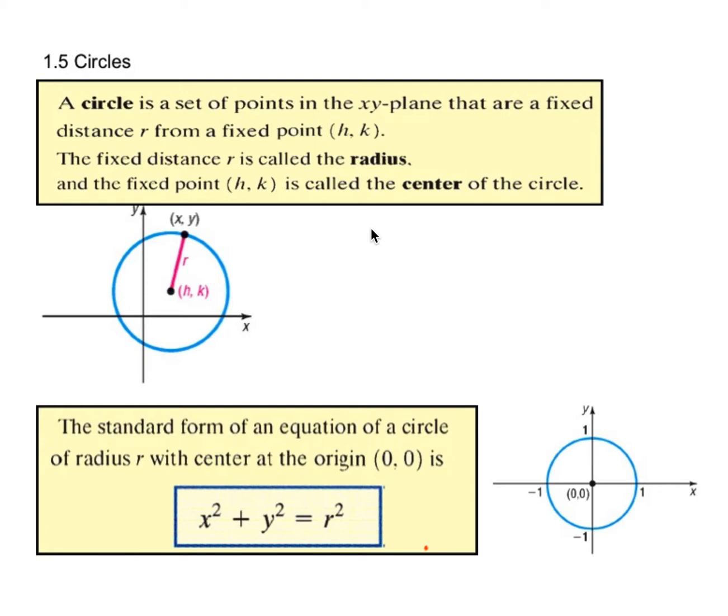Fancy definition. A circle is a set of points in the xy plane that are a fixed distance r from a fixed point (h,k). So (h,k) is the center, the fixed distance r is the radius, and all these points on the circle are that same distance.